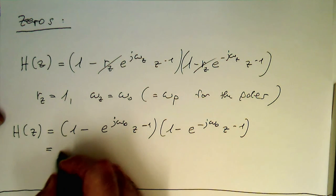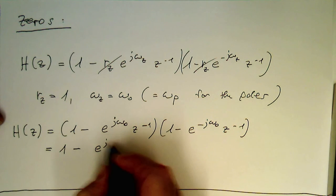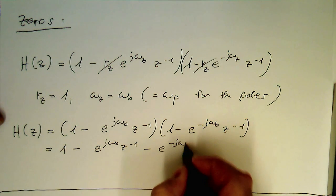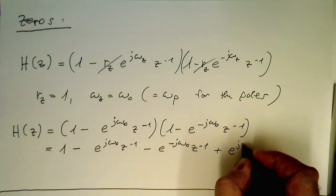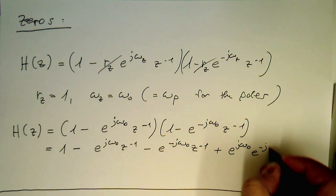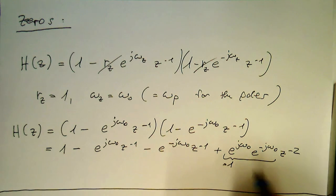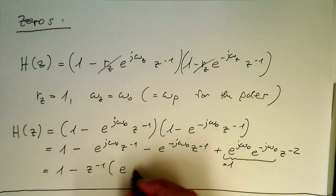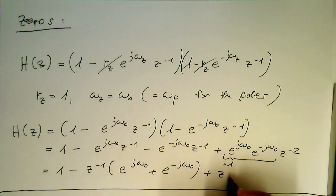Now we multiply this out. That gives us 1, minus e^(j*ω₀)*z^(-1), minus e^(-j*ω₀)*z^(-1), and then the last product term e^(j*ω₀) * e^(-j*ω₀) * z^(-2), which equals 1 * z^(-2). So we get 1 minus z^(-1) * (e^(j*ω₀) + e^(-j*ω₀)) plus z^(-2).